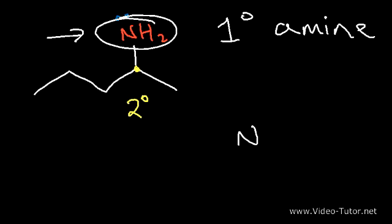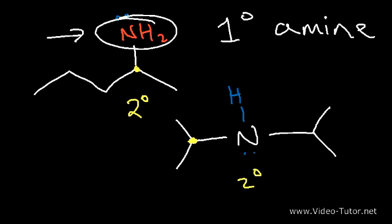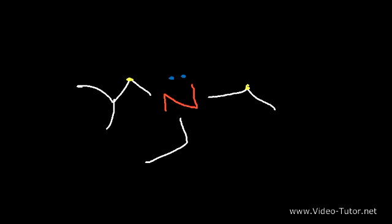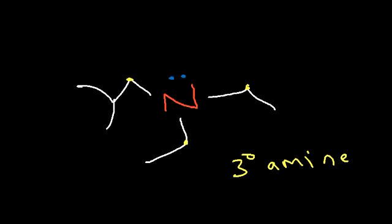Let's try another amine example. If you count the carbon atoms attached to the nitrogen and find three, then this is a tertiary amine. For amines, you look at the number of carbons directly attached to the nitrogen, not the type of those carbons. So even if the attached carbons are all primary carbons, the amine itself is still a tertiary amine because three carbon atoms are attached to the nitrogen.